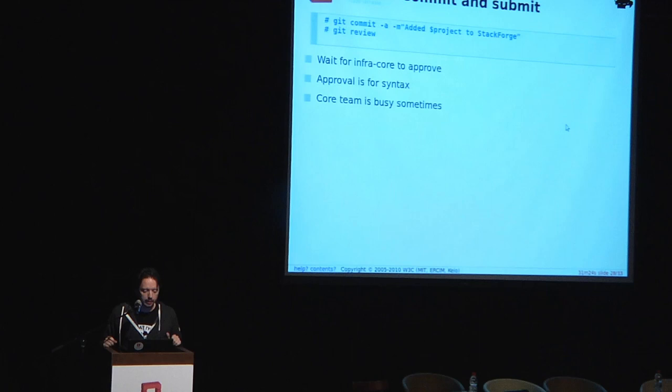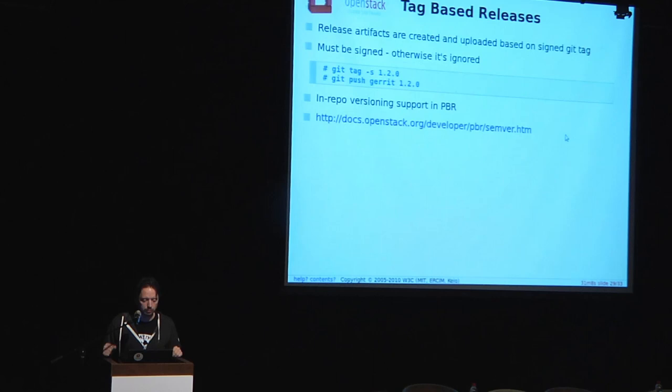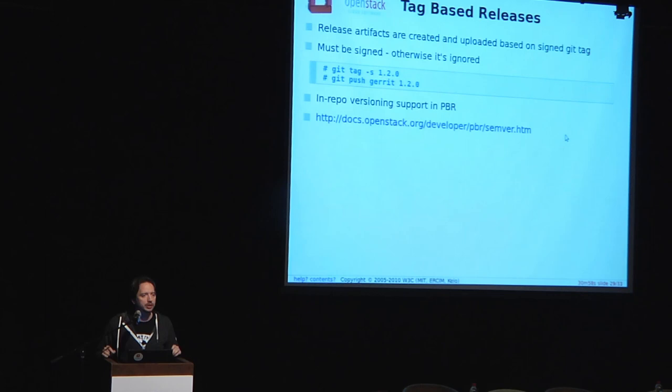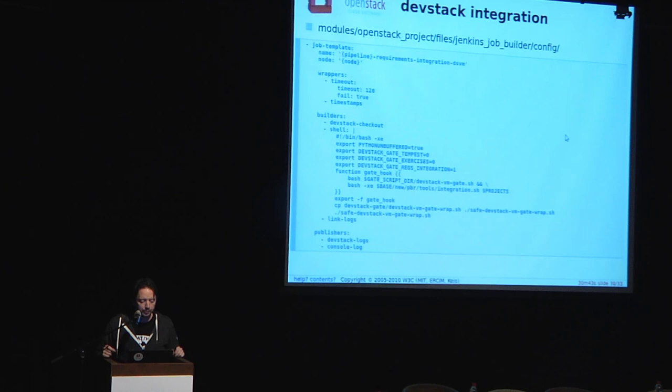Once you've added all that to the repo, you need to submit it for code review. Give us a couple minutes because there are four of us and we need to review this for syntax correction — we're not approving whether or not your project is good enough to go in, it's purely a technical review. Quick note about the tag releasing: we use tag-based releasing in OpenStack and you can too when your project is in StackForge, which means rather than doing a bunch of manual version file commits, we actually just drive all that directly off of git tags.